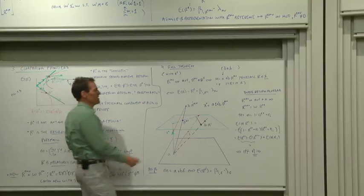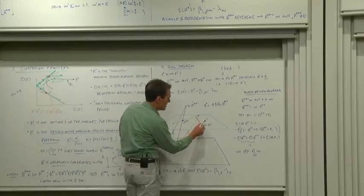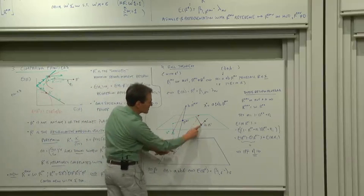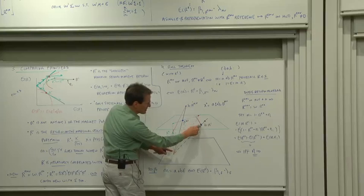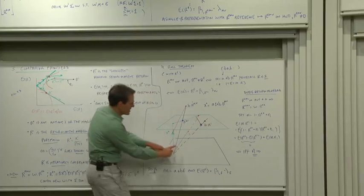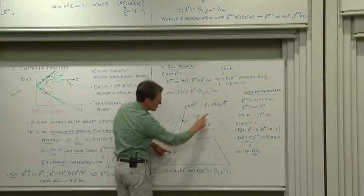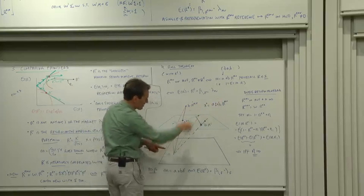And I can't do it if my initial return is not on the mean variance frontier. Let's try that one. Now I stretch out, I take an original return that includes some eta component. I stretch that guy out as much as I like.